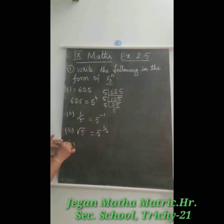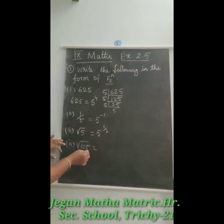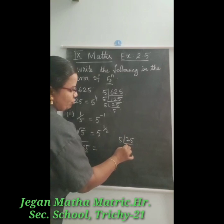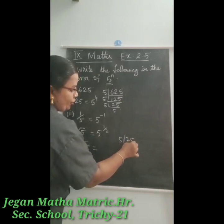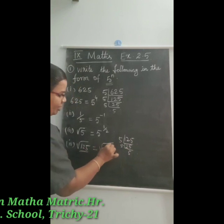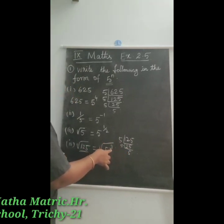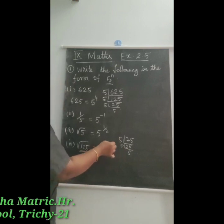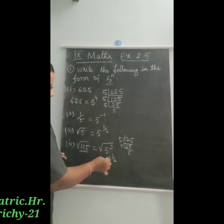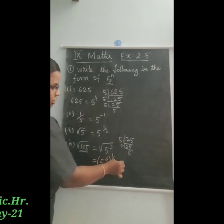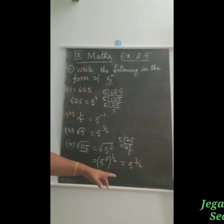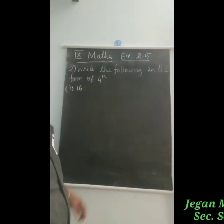The fourth question is root 125. We factorize 125 by dividing by 5: 125 ÷ 5 = 25, 25 ÷ 5 = 5, 5 ÷ 5 = 1 — so 125 equals 5 cube. Therefore root 125 equals the square root of 5 cube, which is 5 power 3, the whole power 1 by 2. Since there are two powers, we multiply them: 5 power 3 into 1 by 2 equals 5 power 3 by 2.